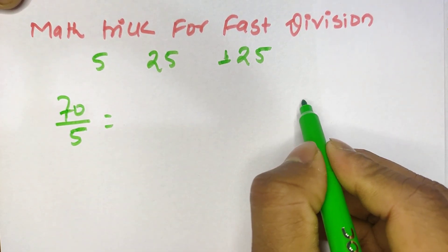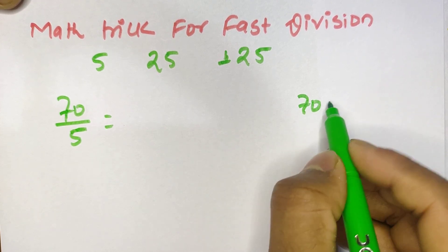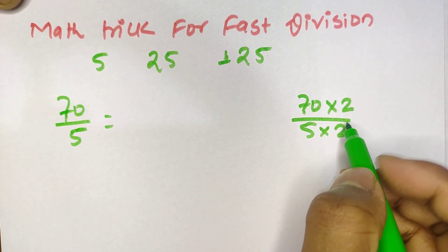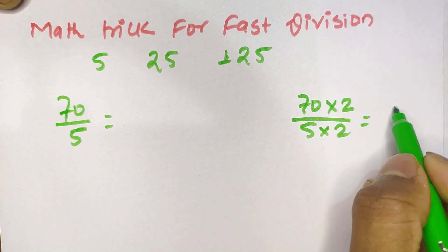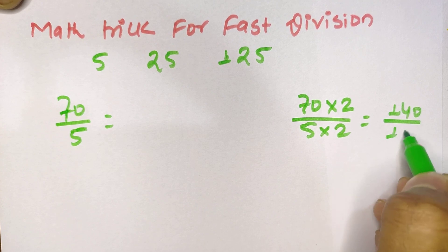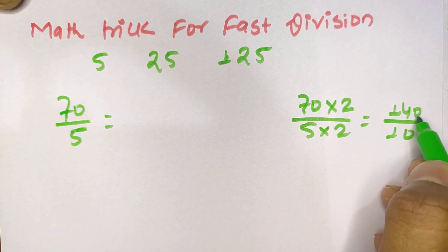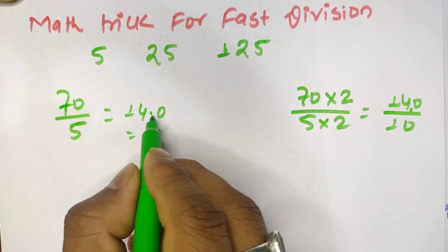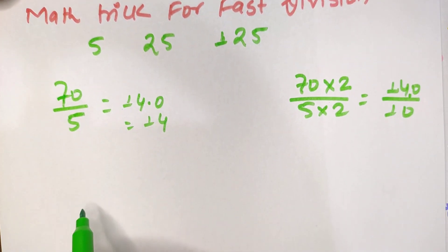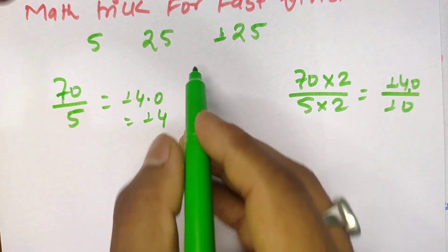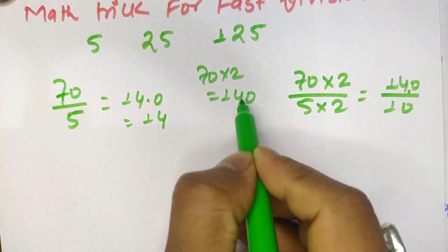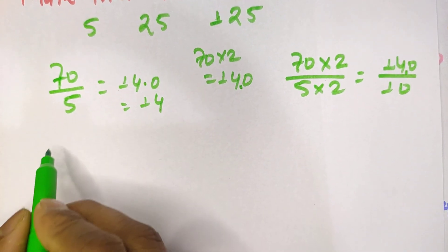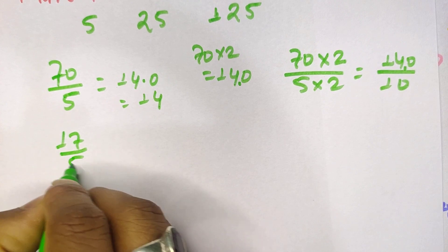To divide 70 by 5, we multiply both numerator and denominator by 2: 70 times 2 divided by 5 times 2, which gives us 140 divided by 10. Dividing by 10 means we place a decimal point after one digit from the last, so the answer is 14.0, which equals 14. The key idea: double the number and place a decimal point after the last digit.